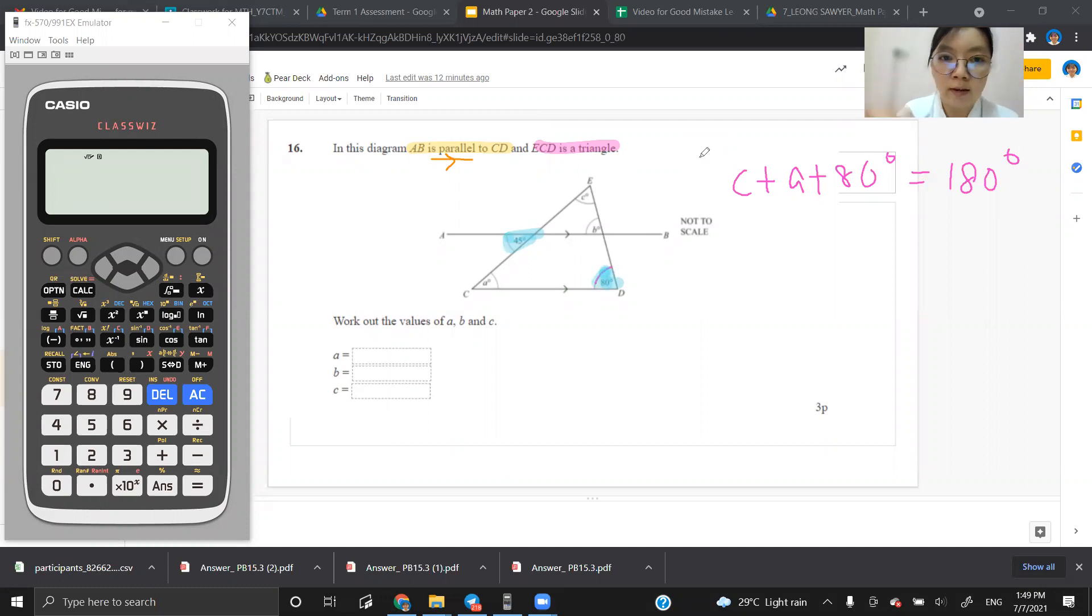First, look at the values of A. Where is A? A is here. So check the angles nearer to A. So I have 45 and I also have 80.